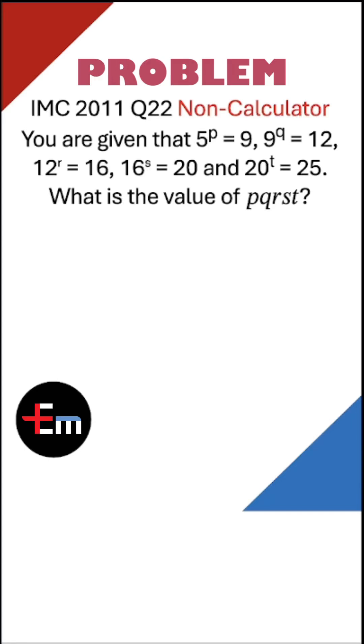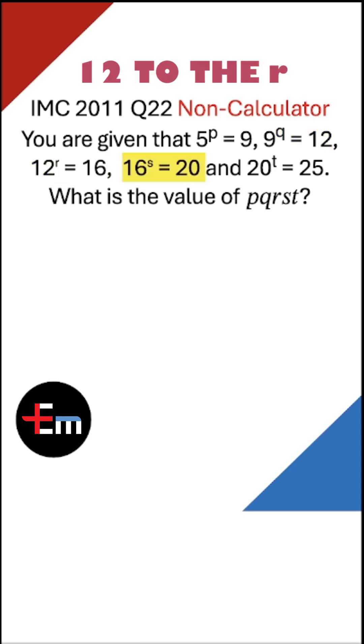UKMT intermediate math challenge problem. Let's solve it. 5 to the p is 9, 9 to the q is 12, 12 to the r is 16, 16 to the s is 20, and 20 to the t is 25.